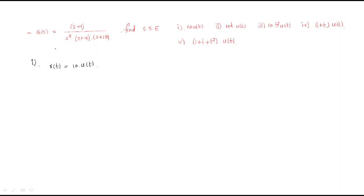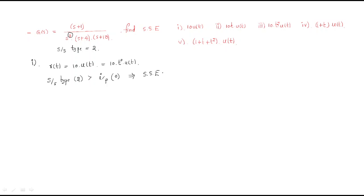First, determine the system type by counting poles at the origin. The number of poles at zero is 2, so the system type is 2. Since type 2 > order of input 0 (for 10·t⁰·u(t)), the steady-state error equals 0.